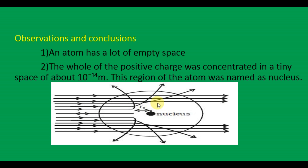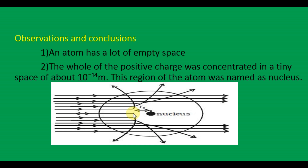The whole positive charge was concentrated in a tiny space of about 10 to the power minus 14 meters; this region of the atom was named the nucleus — the center part of the atom. Some alpha particles are deflected, and they approach the nucleus but do not touch it, maintaining a distance called R0, the distance of closest approach.